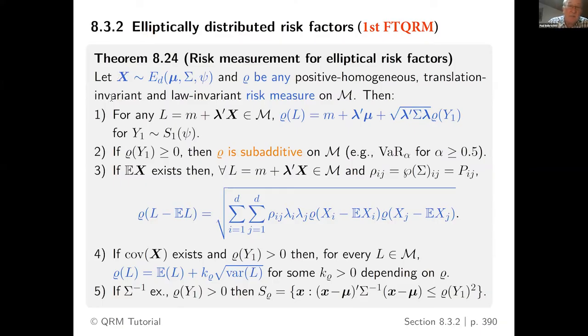Let me give you what I call the first fundamental theorem of quantitative risk management. Just look at this theorem as a painting. The most beautiful world for finance economics to work from a model-based point of view is when your underlying risk factors follow an elliptical distribution. Think of elliptical distribution, the multivariate Gaussian, the multivariate T, so many examples, totally elliptical contour surfaces.